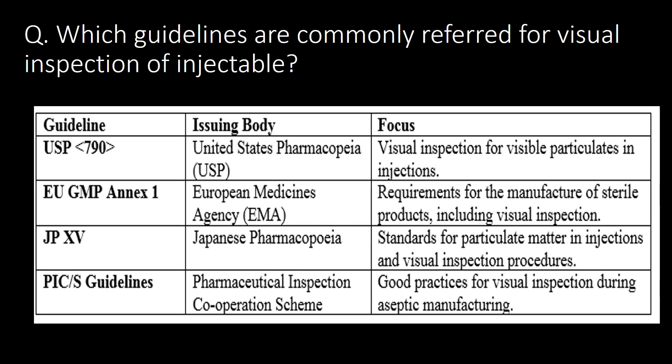Last and very important question: which guidelines are commonly referred to for visual inspection of injectables? USP chapter number 790, EU GMP Annex 1, JP XV (Japanese Pharmacopoeia), and PIC/S guidelines are the most referred guidelines for visual inspection of injectables.